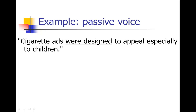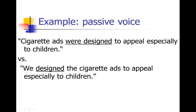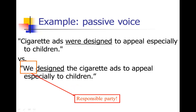Here's another example of a passive voice sentence where the subject has been omitted: "Cigarette ads were designed to appeal especially to children." Notice the passive verb "were designed" — and the object, what was designed, is the cigarette ads. Who designed them? When you read this, it's almost like they just happened that way — it wasn't intentional, nobody did it, nobody's responsible. You can see why people might want to use the passive voice: it takes away the subject, it takes away the responsible party. Contrast that to the active version: "We designed the cigarette ads to appeal especially to children" — which forces you to have a responsible party.